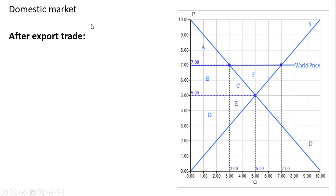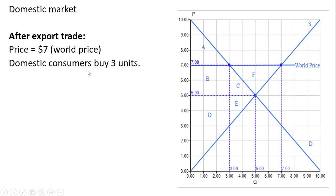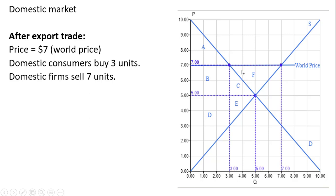Now let's look at the domestic market after export trade. The price will now become the world price of $7 — this is what consumers pay and what sellers will receive. Domestic consumers will only buy three units: we take $7, go over to the demand curve, and come down. Domestic sellers, at the $7 price, will sell seven units.